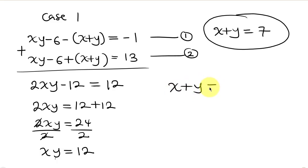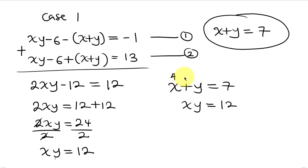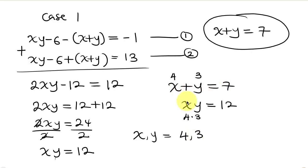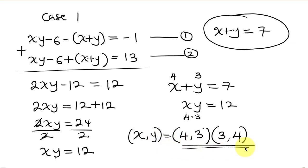So we have x + y = 7 and xy = 12. By inspection, x = 4 and y = 3: they add to 7 and 4 × 3 = 12. Since the equations are symmetric, x = 3 and y = 4 also works. These are the first solution values for x and y.